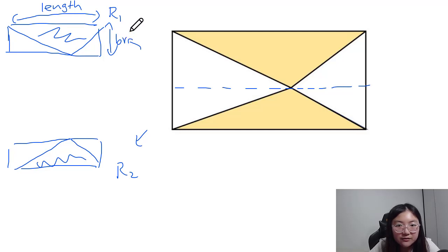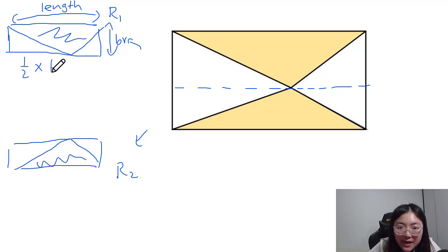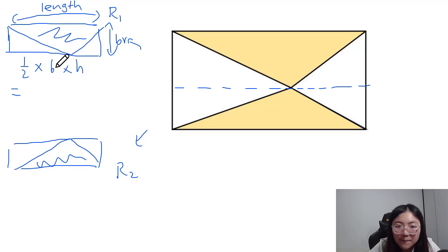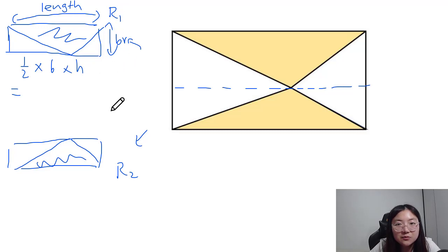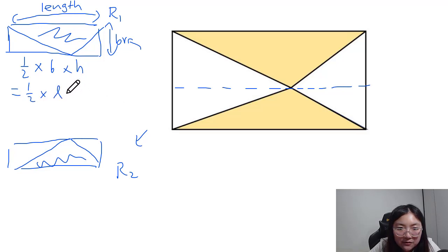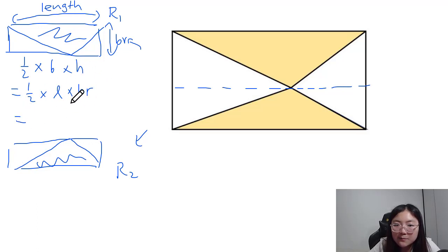I'll call this breadth 'br'. To find the area of the triangle, we know it is half times base times height. The base of the triangle is the length of the rectangle, and the height of the triangle is the breadth of the rectangle. So we write: half times L times br — and L times br is also the area of the rectangle.